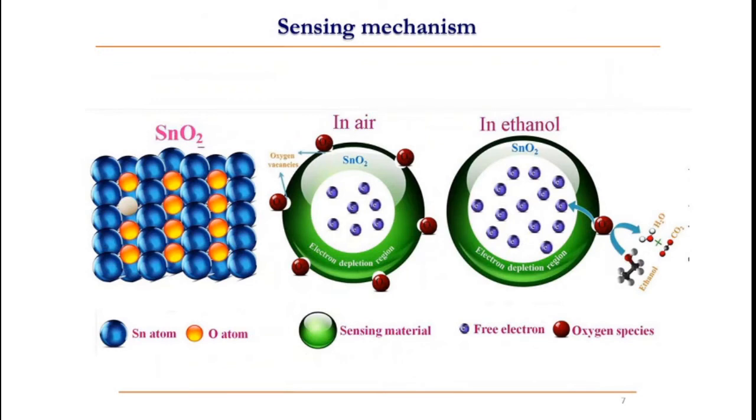This can be understood from this figure. So, consider this semiconductor, tin oxide (SnO2). These are tin atoms, and the orange colored ones are oxygen atoms. This represents the oxygen vacancy. These oxygen vacancies are the favored sites of oxygen adsorption.